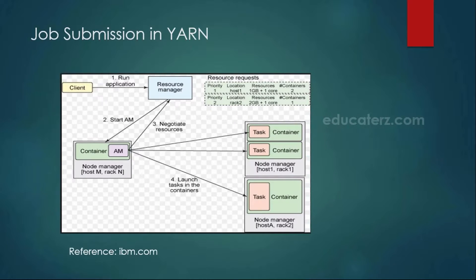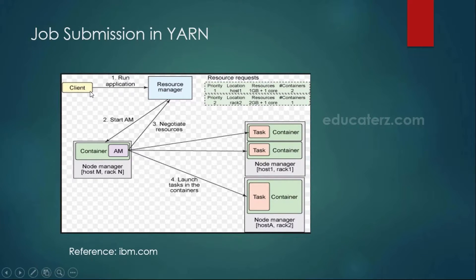Once your job is executed, the application master is killed. When a new job gets submitted, a new application master gets created. The client submits the application using a specific command called the hadoop jar command, which is how we submit MapReduce programs — we will discuss how to write MapReduce programs in the next modules.